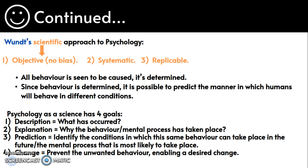Psychology as a science has four goals. Number one: description — you describe what has taken place. Number two: explanation — why the behaviour or the mental process has taken place. Number three: prediction — identifying the conditions in which the same behaviour can take place in the future, or the mental process most likely to take place. Number four: change — this is when you want to prevent unwanted behaviour, enabling a desired change.